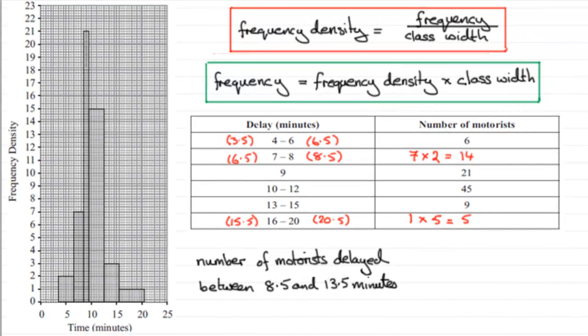Now for this last part, we've got to work out the number of motorists that were delayed between 8.5 and 13.5 minutes by the roadworks. So it's just a question of adding up the frequencies in this interval.